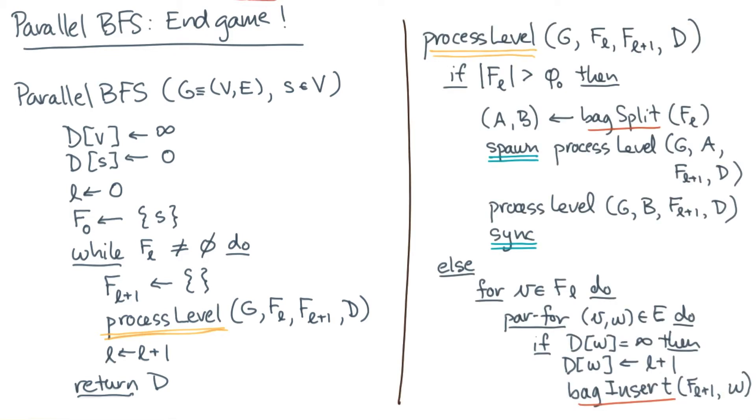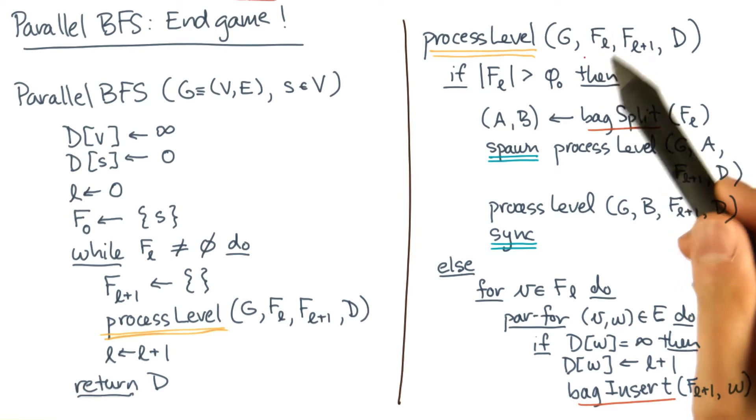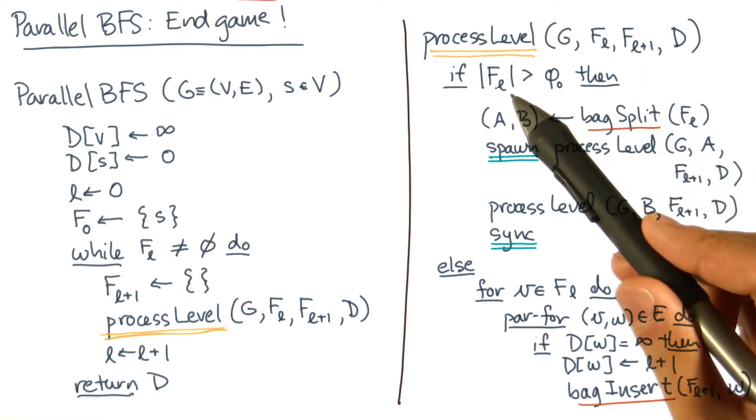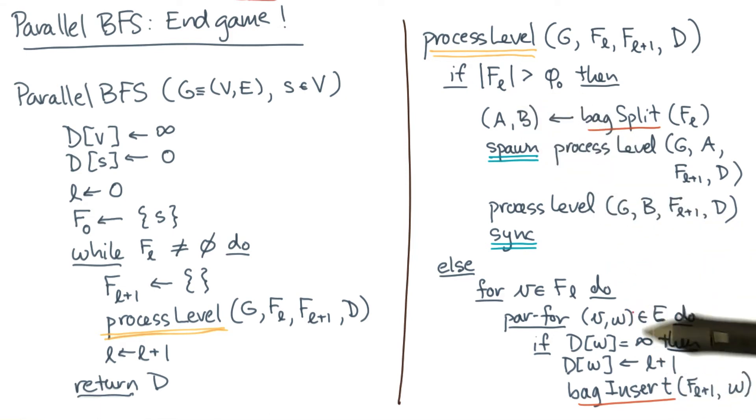Here's some pseudocode that implements exactly a divide and conquer scheme. It's got two parts. First, if the input bag is big enough, then we do divide and conquer using splitting. If the bag is not big enough, then we just fall back essentially to the sequential code.